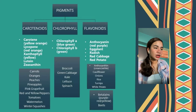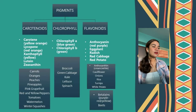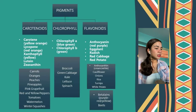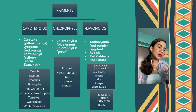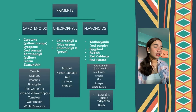This is the diagram showing the three pigments of plants. First, we have carotenoids. Examples of carotenoids include carrots, oranges, peaches, pineapples, pink grapefruit, red and yellow peppers, tomatoes, watermelon, and winter squashes. It includes the carotene or yellow-orange color, lycopene or red-orange, and xanthophyll or yellow color.